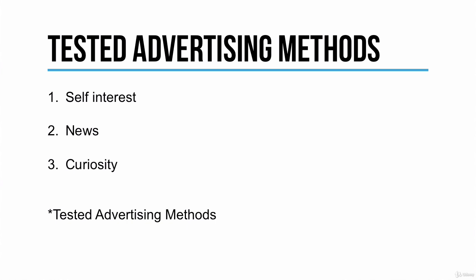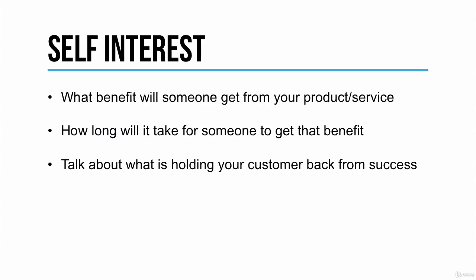As I mentioned, these are ranked in order of importance. Self-interest is the most effective, news is the second most effective, followed by curiosity. Self-interest is what benefit someone will get from your product or service, and that's really important.